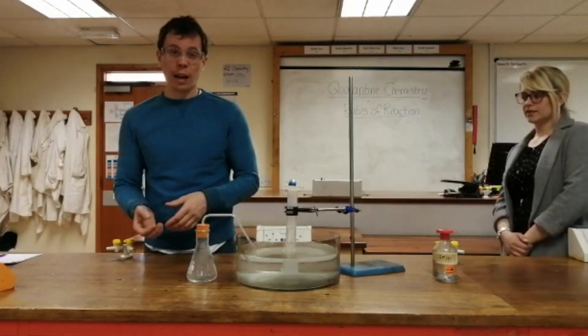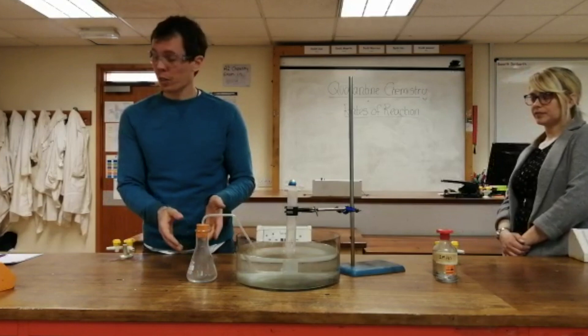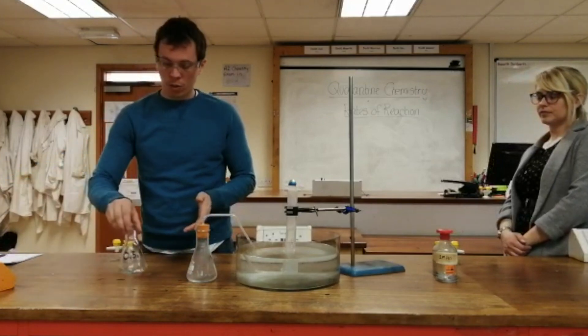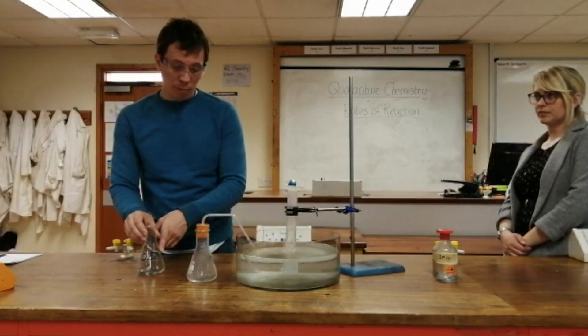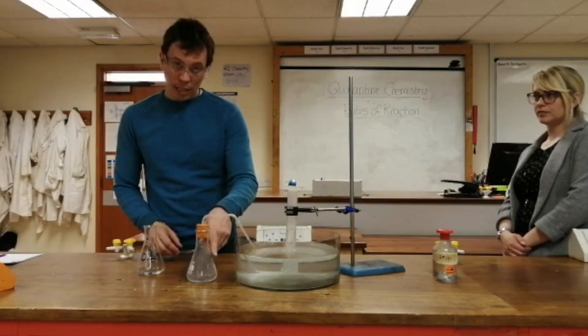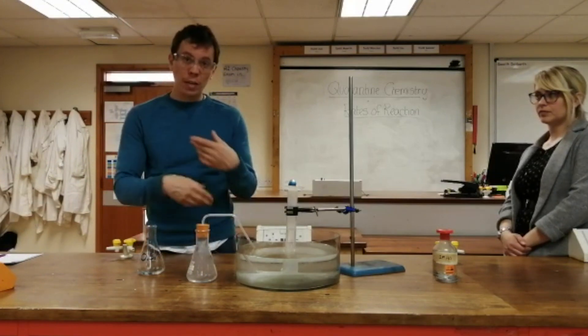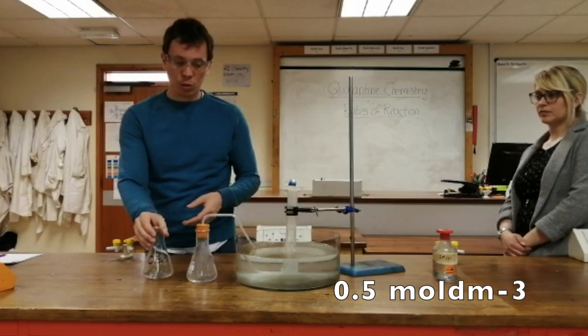We now need to repeat the experiment at half that concentration, 0.5 molar. Now you can make 0.5 molar by measuring out 10 centimeters cubed of one molar and 10 centimeters cubed of water. Mix them together and you've got half the concentration.